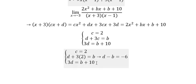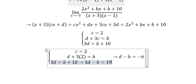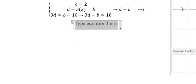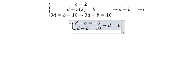The second equation gives us 3d minus b equals 10. So we have a new system: d minus b equals negative 6 and 3d minus b equals 10.